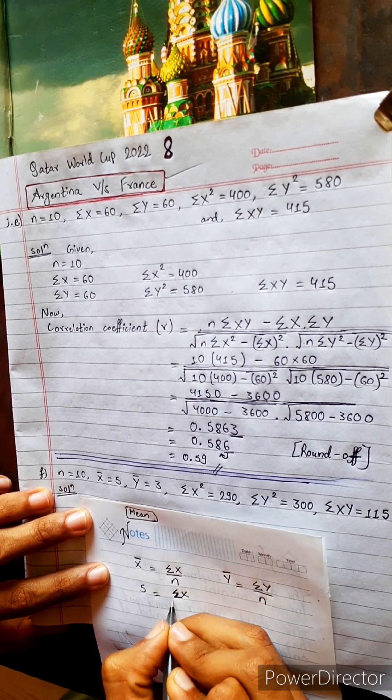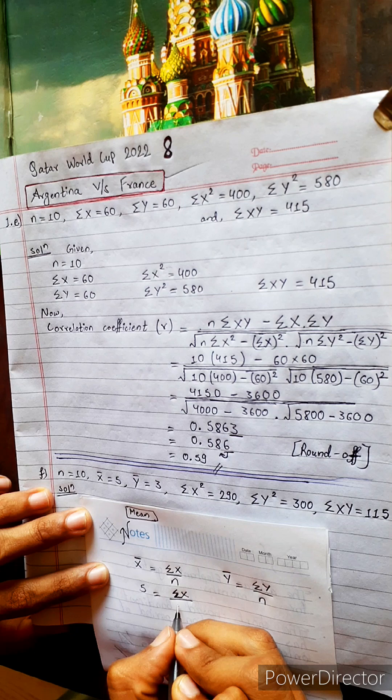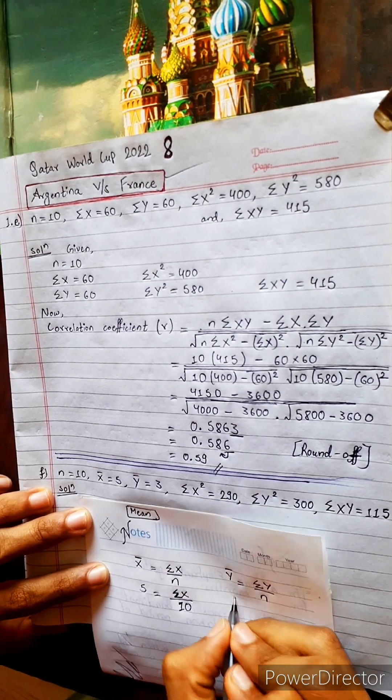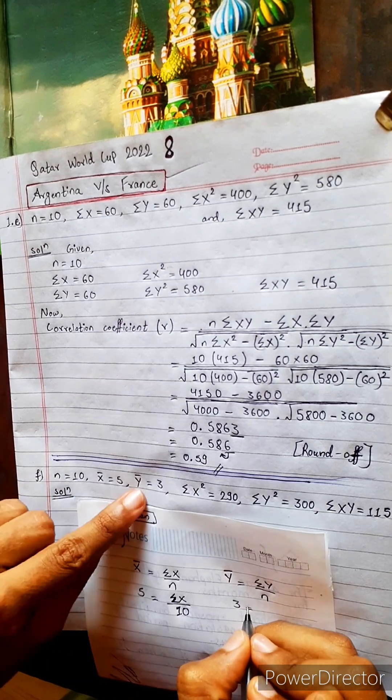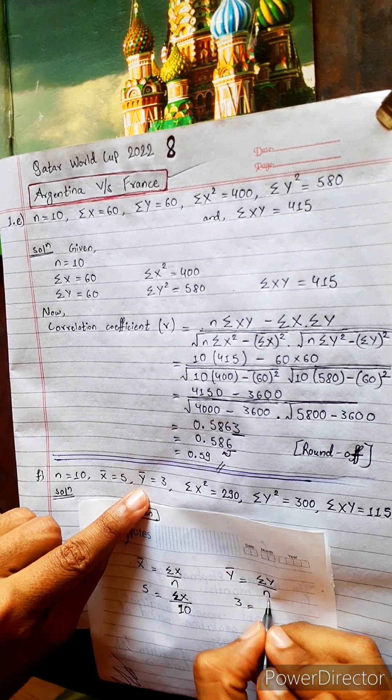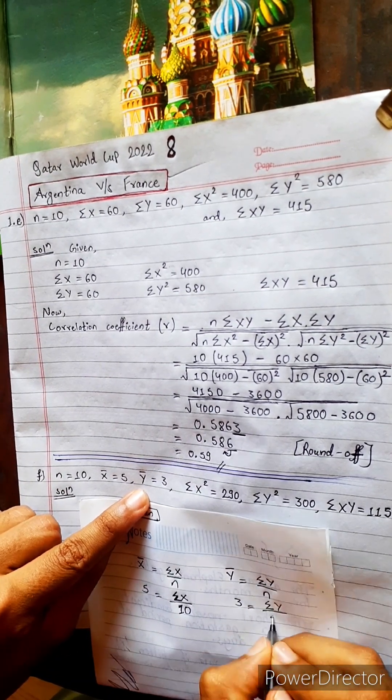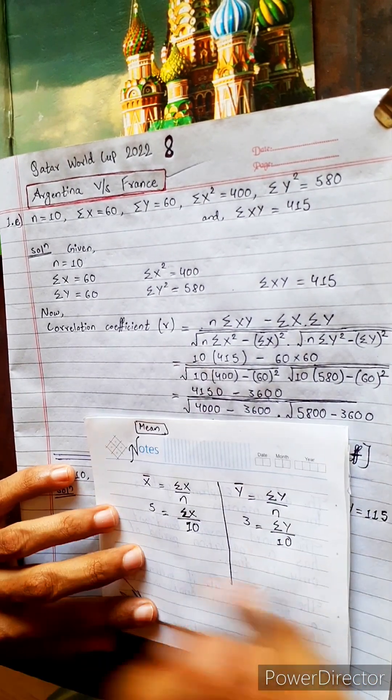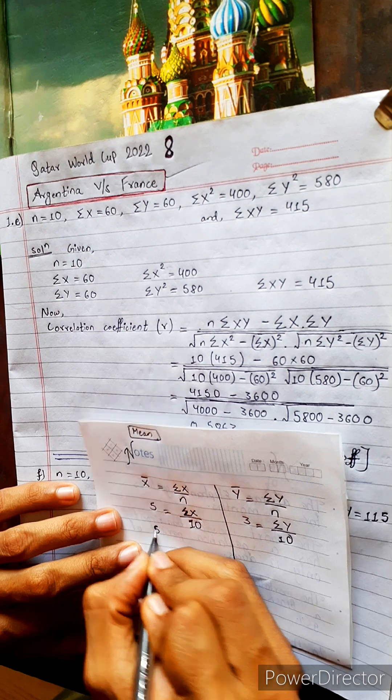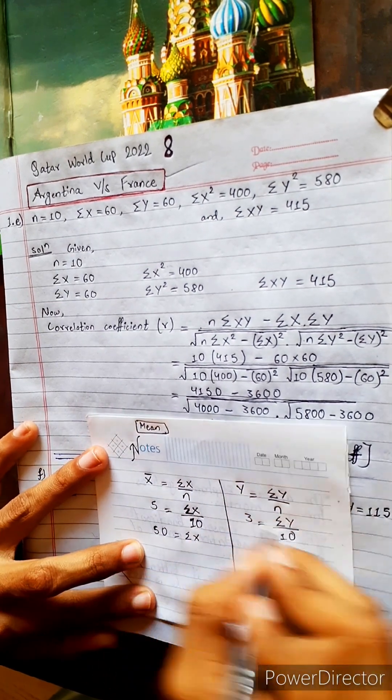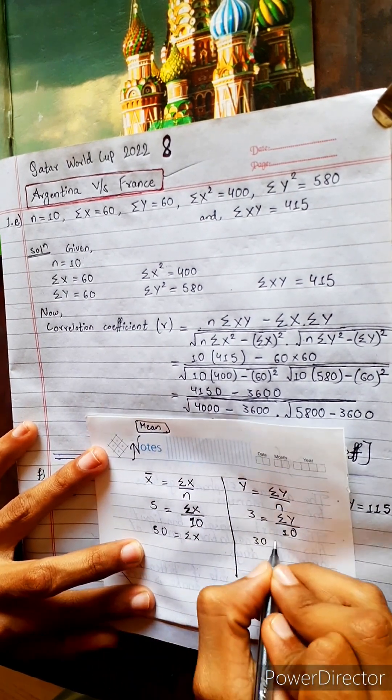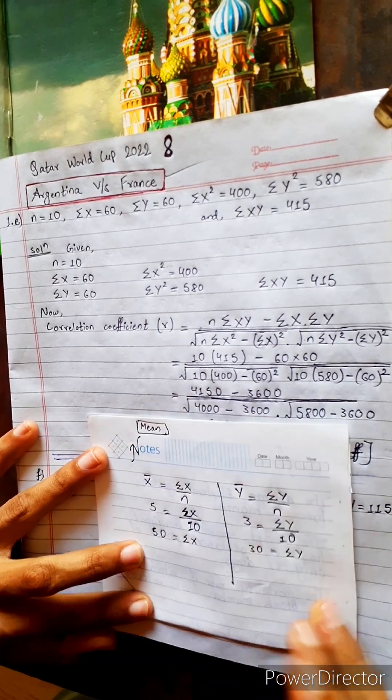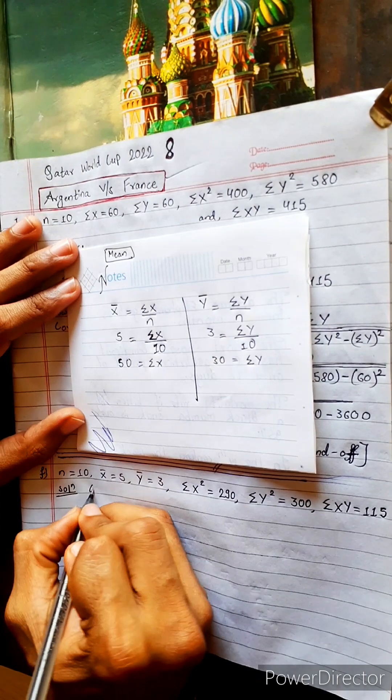Now 5, sorry, 10. This side write 3, because y bar is 3 and summation y we have to find, we don't know. Now do it out: it will be 50 equals to summation x. Do it out: it will be 30 equals to summation y. Now you got this.